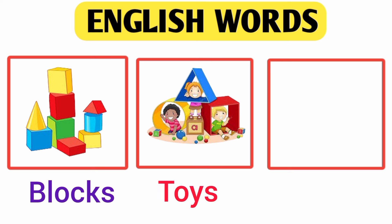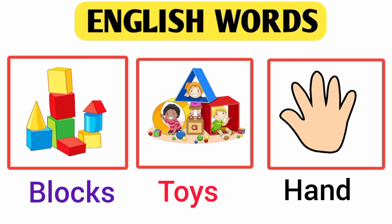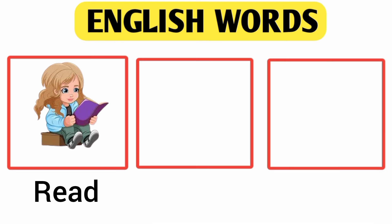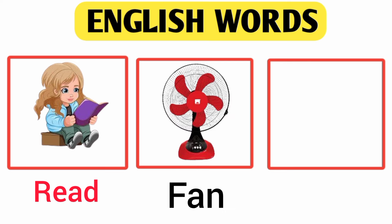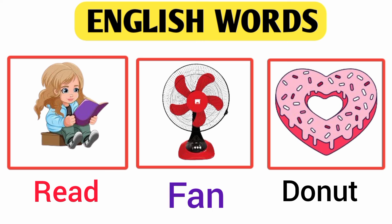Twice. This is Twice. Hand. This is Hand. Broken. Next word is Read. This is Read. Fan. This is Fan. Donut. This is Donut.